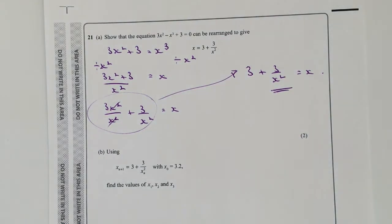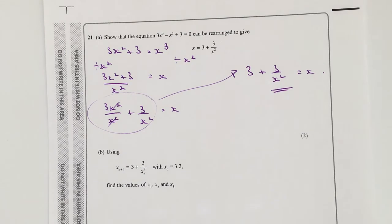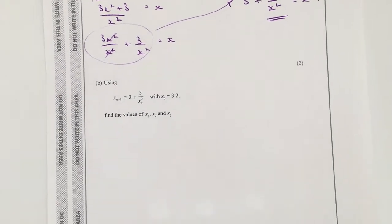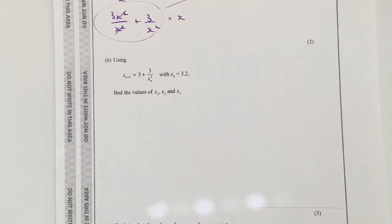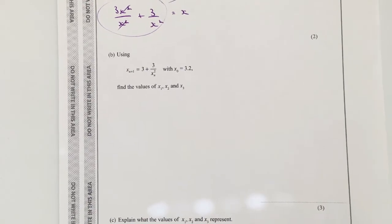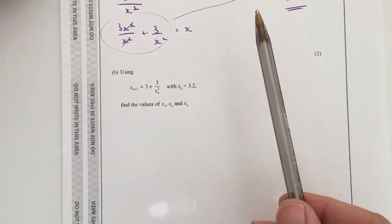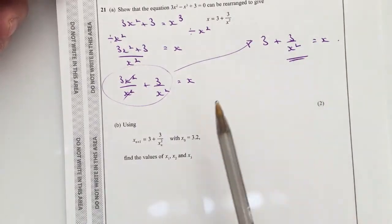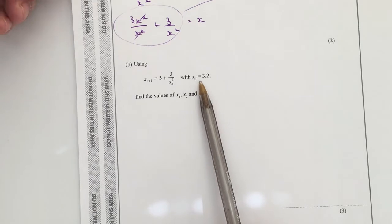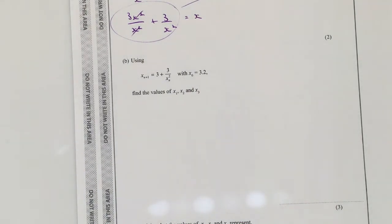Okay, hope that's okay for you. Let's move on then to part two of this question. Now again, very similar layout on all of the questions on iteration, and it just basically says using this iteration formula that we've just derived, this one here, and starting with x0 equals 3.2, use that to find the next three values.